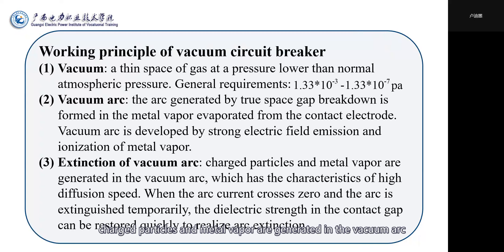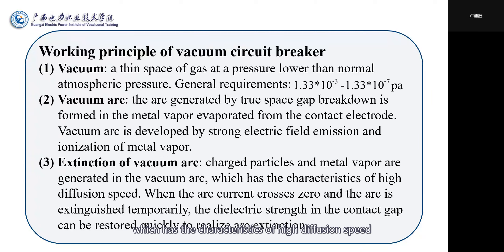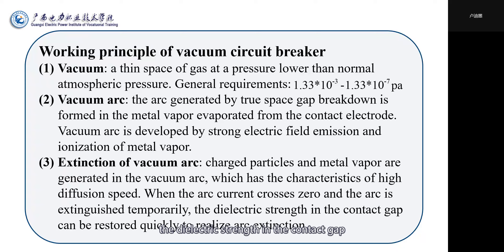(3) Extinction of vacuum arc: charged particles and metal vapors are generated in the vacuum arc, which has the characteristic of high diffusion speed. When the arc current crosses zero, the arc is extinguished temporarily. The dielectric strength in the contact gap can be restored quickly to realize arc extinction.